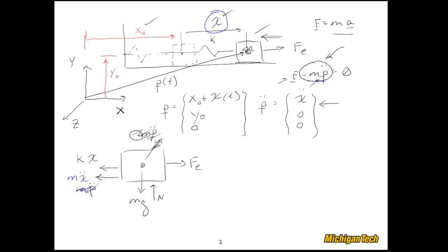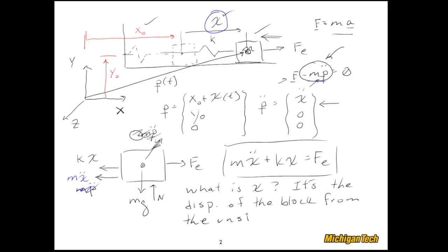It's just sort of out of habit, I guess. It's MX double dot by sum of all the forces in the horizontal direction, plus KX equals FE. And that's exactly what we had in the other slide. But now we can answer this question. The question was, what is X? And now we know the answer is, it's the displacement of the block from the unstretched configuration.